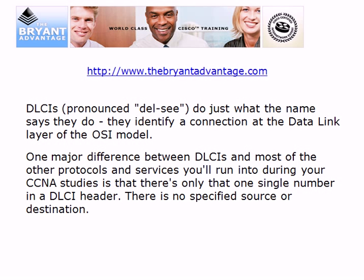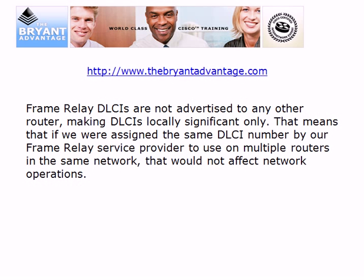DLCIs do exactly what the name says — they identify a connection at the data link layer of the OSI model. There's one major difference between DLCIs and most other protocols you encounter during your CCNA studies: there's only a single number in a DLCI header. We won't have a source DLCI or a destination DLCI like we do with IP addressing. Frame Relay DLCIs are not advertised to any other router — the key phrase is locally significant only.